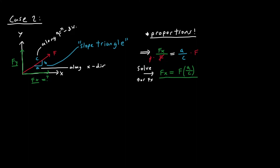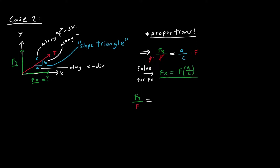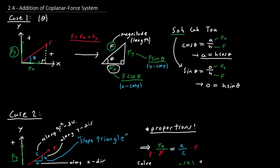For Fy, we do essentially the same: Fy over F equals b over c, since b is along the y direction. Multiplying F to the other side gives Fy equals F times b over c, which is the y component of the force. Since the force is in the direction of both positive y and positive x, these components remain positive — as is also the case for the previous example.